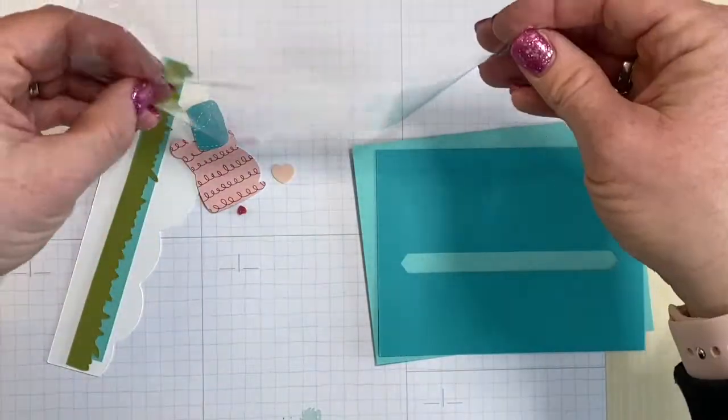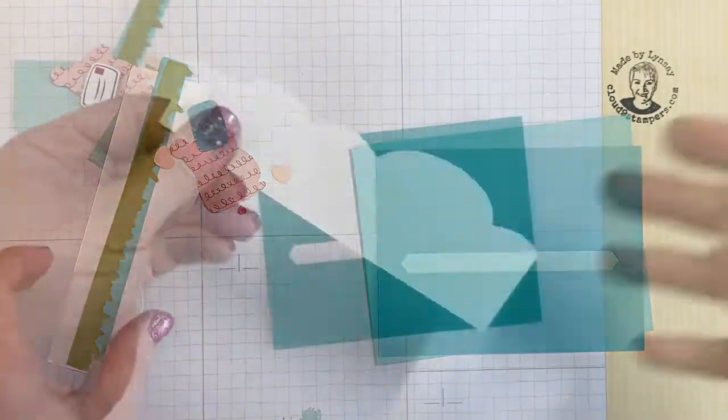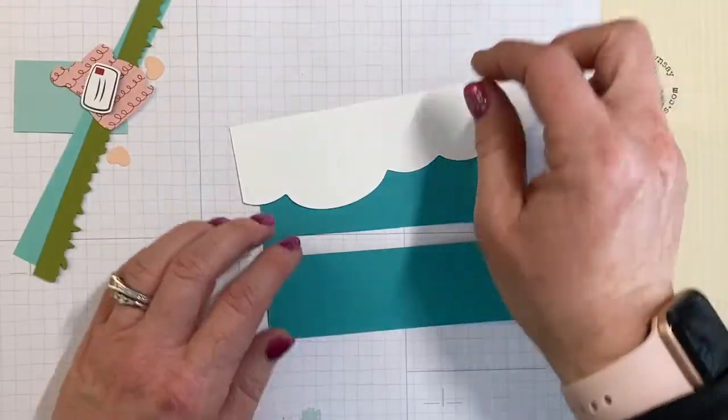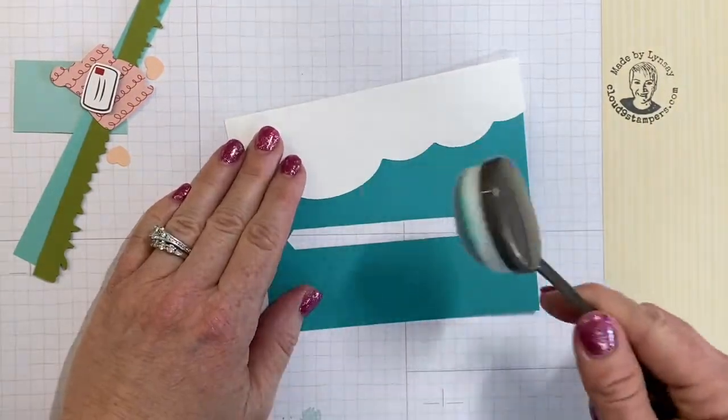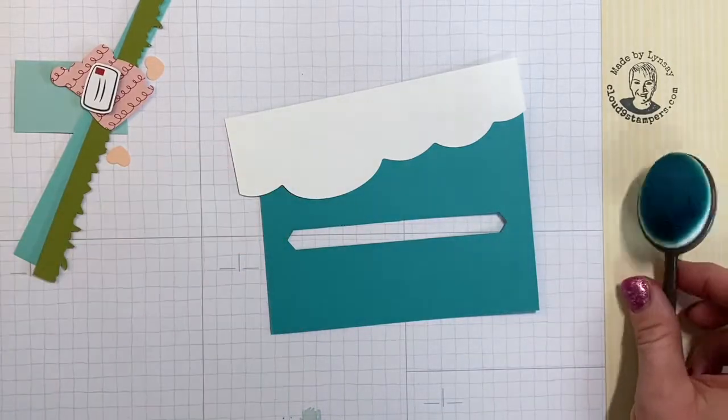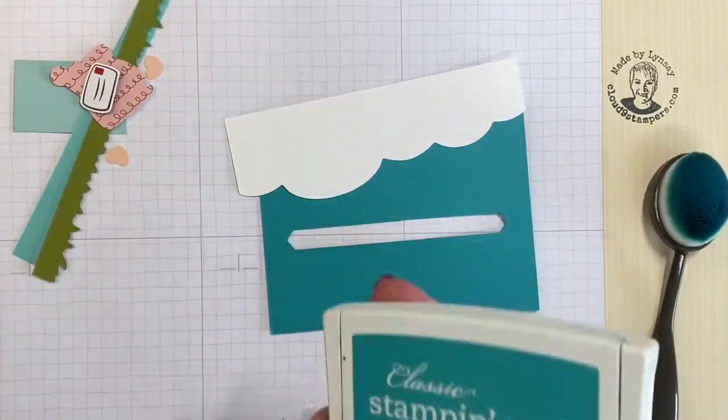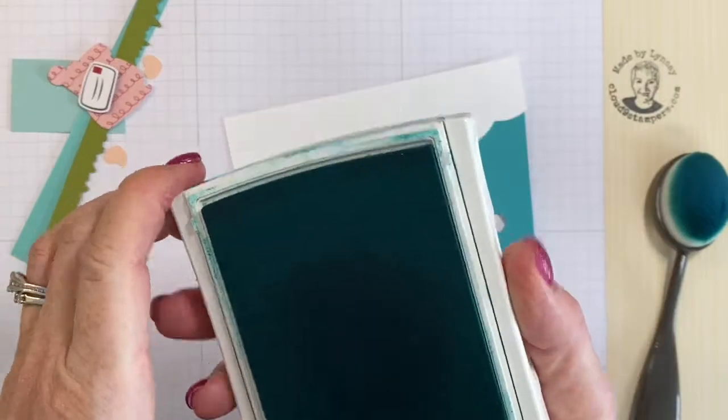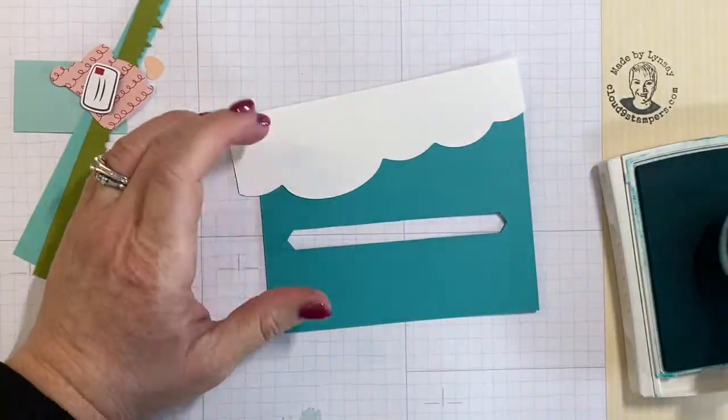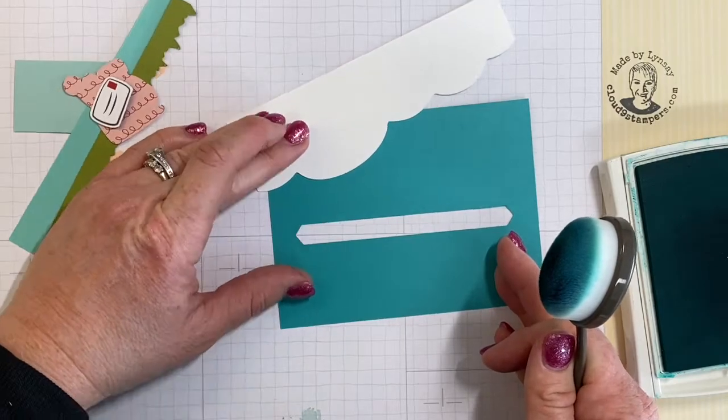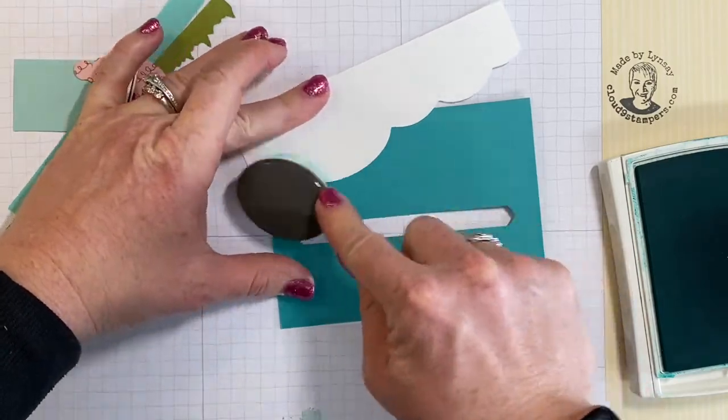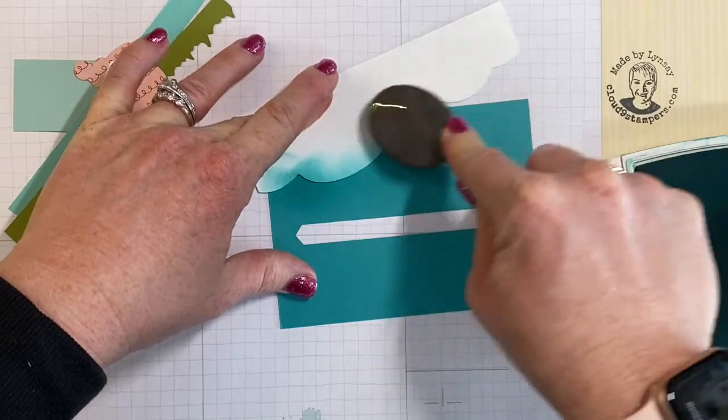I've pre-cut for you this little template and we're going to use a blending brush to add some really subtle clouds to the background. If you don't have a blending brush, you could use a sponge dauber, a foam roller, or you could even just glue this on if you'd prefer. I'm going to show you how to make some Bermuda Bay clouds, so we're just going to go over top of the template.